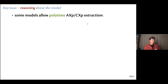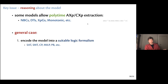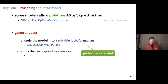The key question is how to make these checks efficiently. For some classes of models there are polynomial-time explanation extraction procedures — these include Naive Bayes classifiers, decision trees, graph-based models like BDDs, monotonic classifiers, and others. In general, we encode the classifier into a suitable logic formalism — propositional logic, some decidable fragments of first-order logic, MIP, PB — and depending on our choice, the performance of the extraction procedure varies significantly. We then apply the corresponding reasoner in the deletion loop.